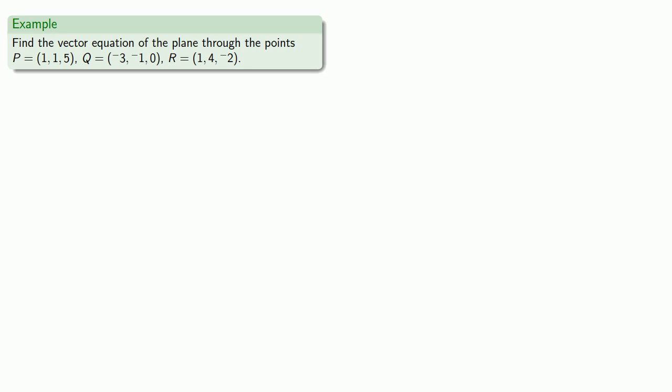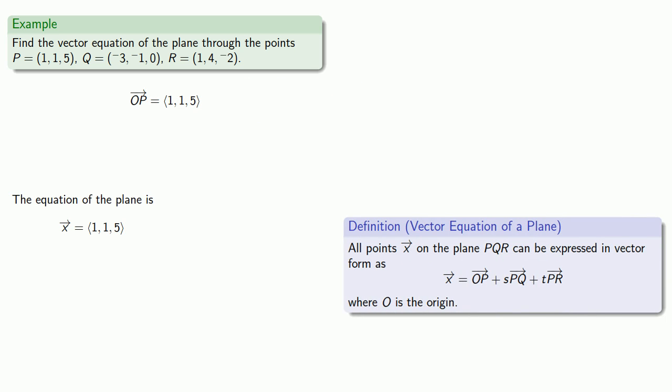So if I want to write the vector equation of the plane through the points P, Q, and R, first I need to get to a point on the plane. For example, I can take the vector OP, and then I can add to that any linear combination of the two vectors that are in the plane, PQ and PR. And so this gives me the parametric or vector equation of the plane. Any point on the plane is this vector OP plus some linear combination of the two vectors in the plane.